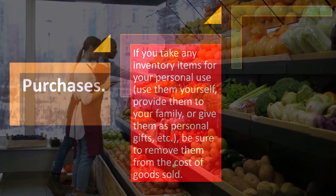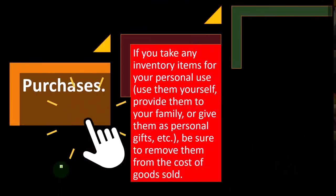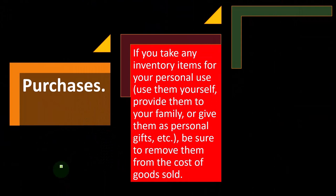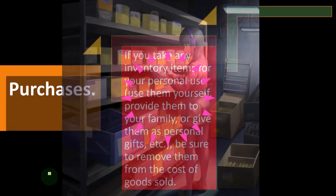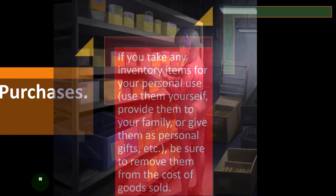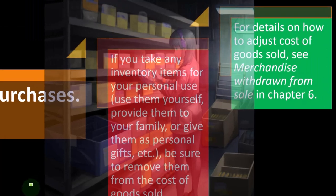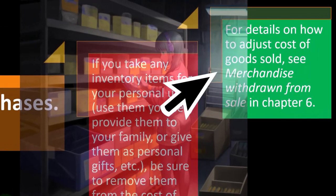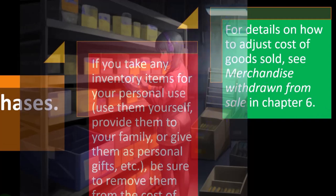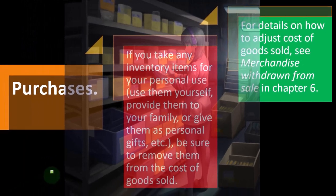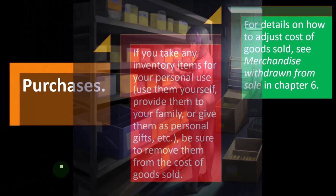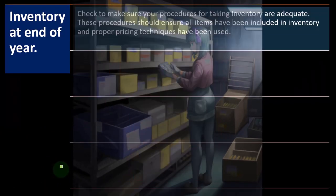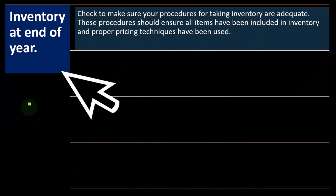The IRS might question you about purchases if you take any inventory items for your personal use, use them yourself, provide them to your family, or give them as personal gifts. Be sure to remove them from cost of goods sold. For details on how to adjust cost of goods sold, see merchandise withdrawal from sale in chapter six. If you're dipping into your own stash of inventory, you have to properly account for that — it is essentially a withdrawal type of situation.